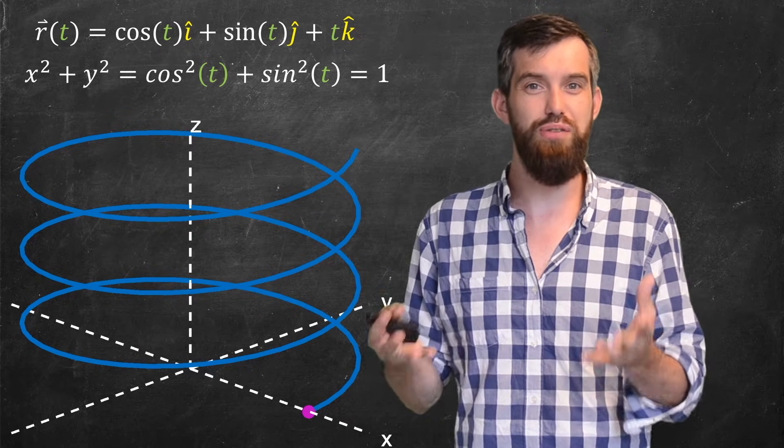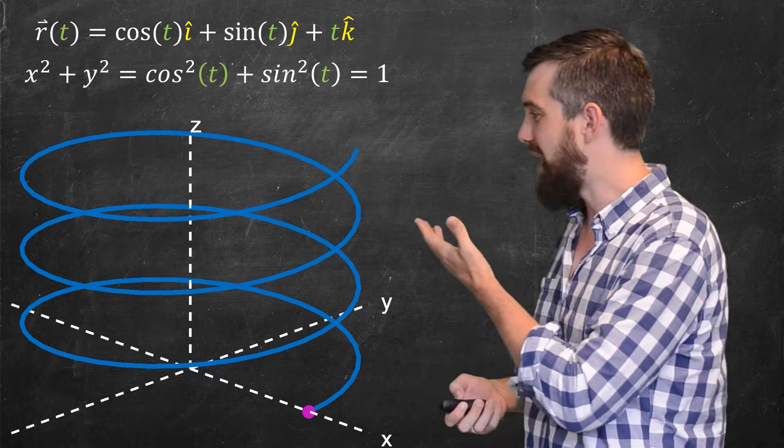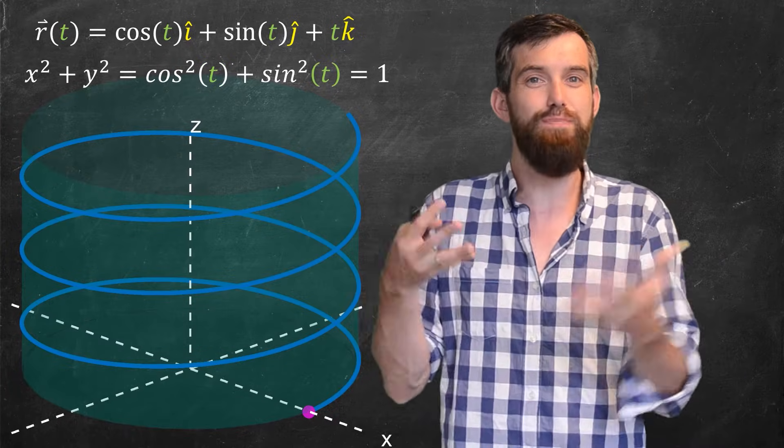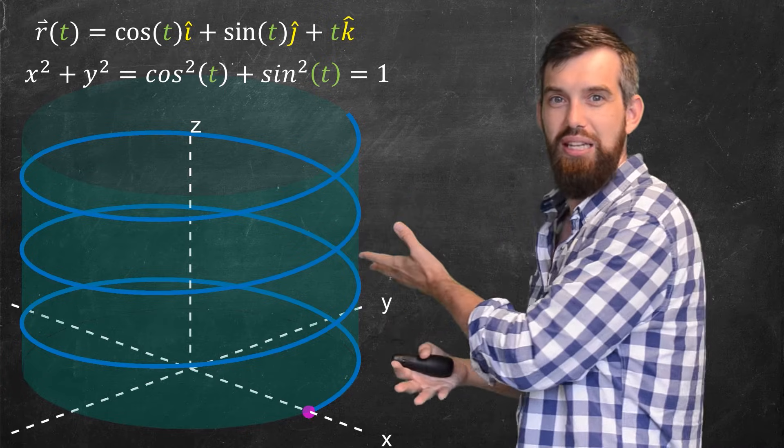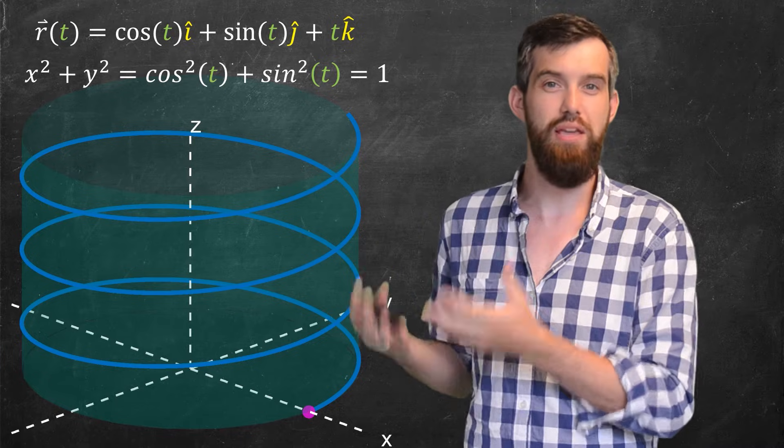Indeed, when you take that equation of a circle and you consider the third component, the z direction, what you really just get is a cylinder and all of these points on this helix are constrained to live on that cylinder. So it makes a lot of sense that you'd have this kind of helical behavior.